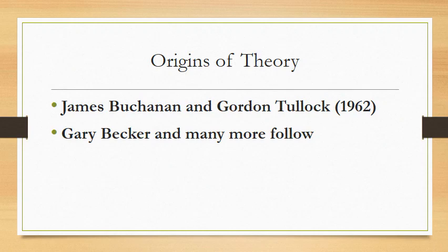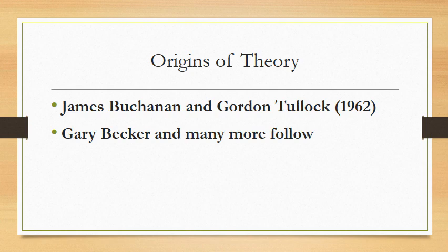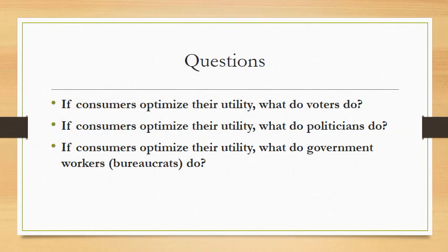Public choice theory actually begins in 1962. A man named James Buchanan — who would eventually win the Nobel Prize for it — along with his partner Gordon Tullock developed the theory. It was then picked up by people like Gary Becker from the University of Chicago, also a Nobel Prize winner, who is famous for talking about how economics applies to things other than business. Gary Becker's whole career is about using economics to analyze crime, politics, home life, schools — anything that isn't a traditional business context.